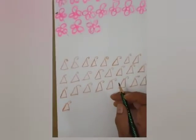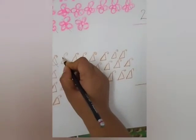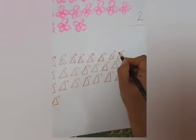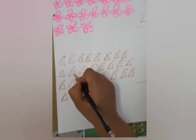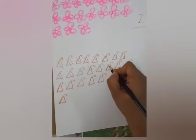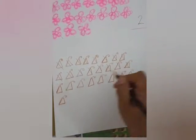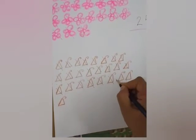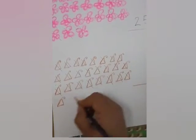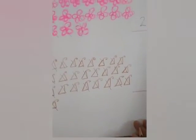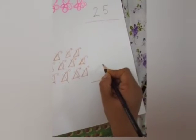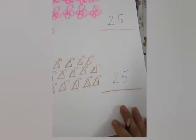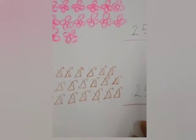Now let's count how many caps are here. Count with me: 1, 2, 3, 4, 5, 6, 7, 8, 9, 10, 11, 12, 13, 14, 15, 16, 17, 18, 19, 20, 21, 22, 23, 24, 25. How many caps, students? 25. So which number will we write? 2, 5: 25. Now you know how to count number 25.